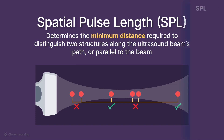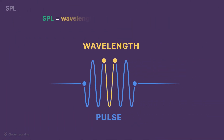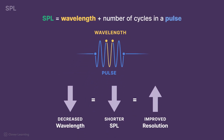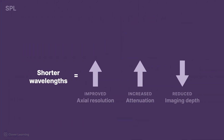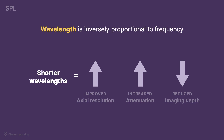SPL determines the minimum distance required to distinguish two structures along the ultrasound beam's path, or parallel to the beam. Since SPL is the product of wavelength and the number of cycles in a pulse, decreasing the wavelength shortens SPL, allowing improved detail resolution. Higher frequency transducers generate shorter wavelengths because wavelength is inversely proportional to frequency. While this improves axial resolution, it also increases attenuation, reducing penetration depth.